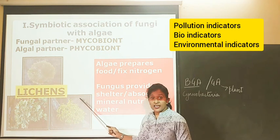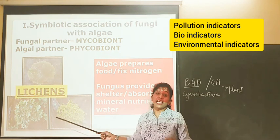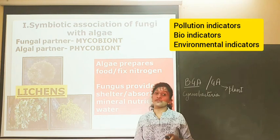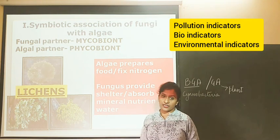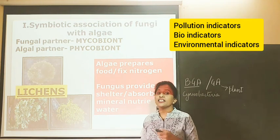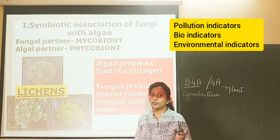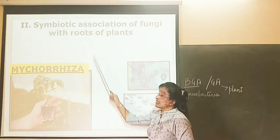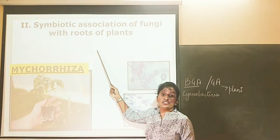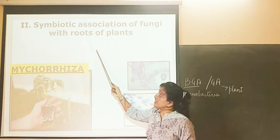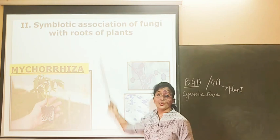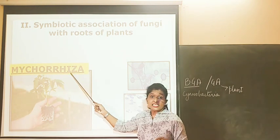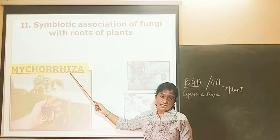In polluted places, we can see the algae but such lichen association will be absent — it will get automatically eradicated from that area. The next symbiotic association of fungi is with the roots of plants, called as mycorrhiza. Here the roots will get covered with the mass of woolly fungal growth around them.